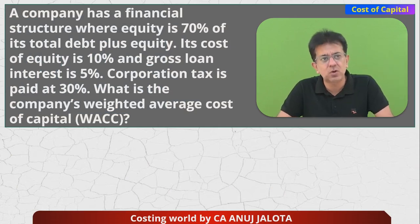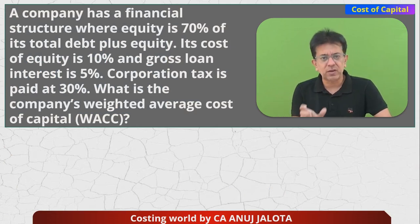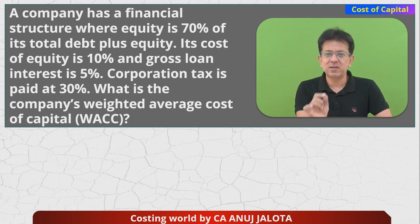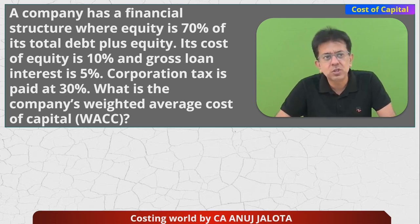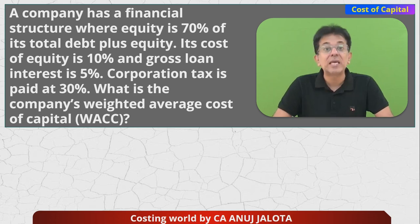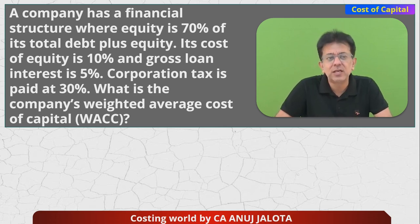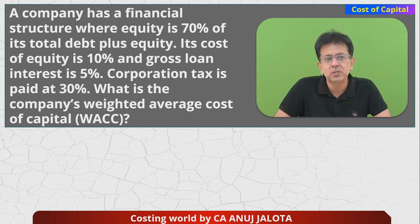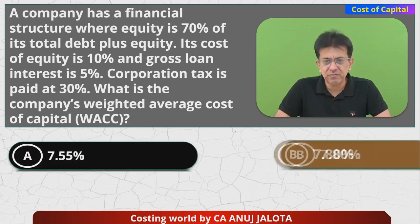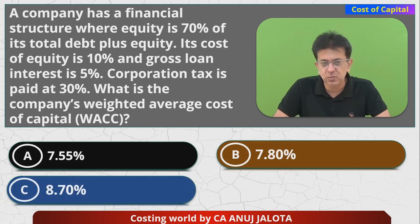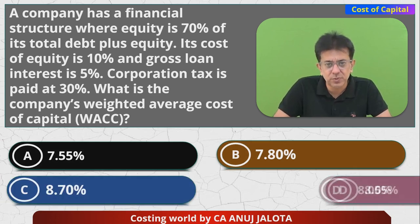A company has a financial structure where equity is 70% of the total debt plus equity — so out of 100, 70 is equity and 30 is debt. Its cost of equity (Ke) is 10%. Gross loan interest rate is 5%, and the corporation tax rate is 30%. What is the company's WACC?